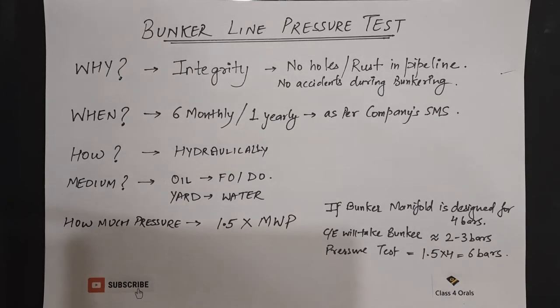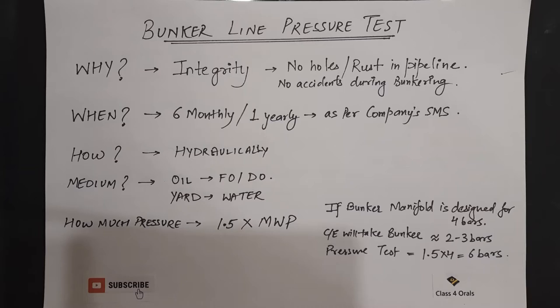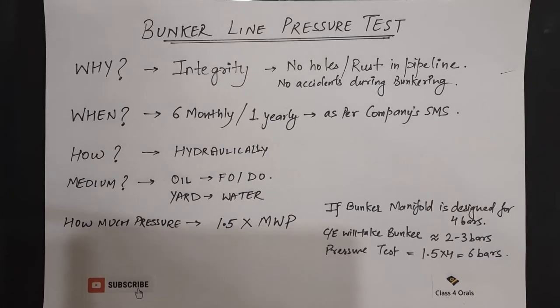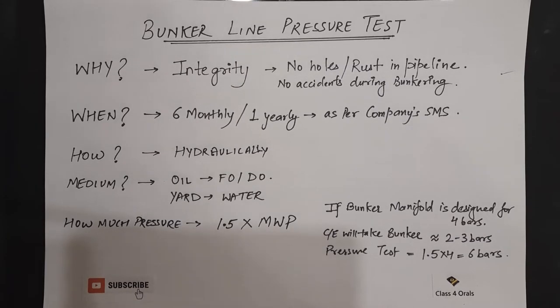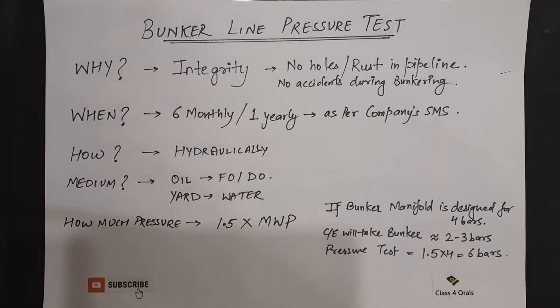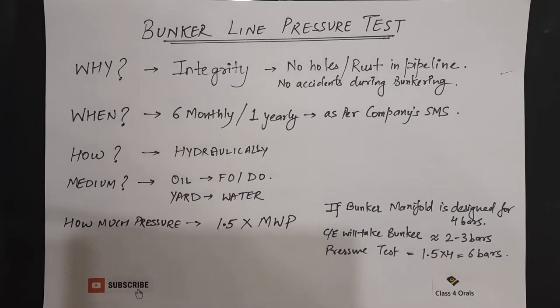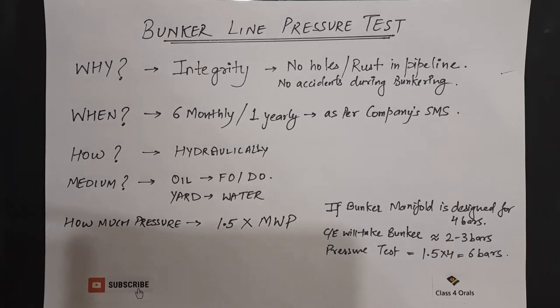How much pressure is required to conduct the bunker line pressure test? Usually it is 1.5 times the maximum working pressure. Suppose if the bunker line manifold is designed for 4 bars, the chief engineer will take the bunker line pressure at around 2 to 3 bars because he does not want to go to the maximum working pressure. Hence, the pressure test which is to be conducted is 1.5 times 4 bars that comes out to be 6 bars.